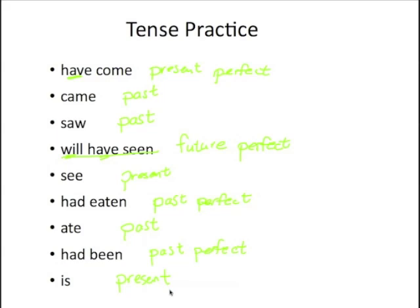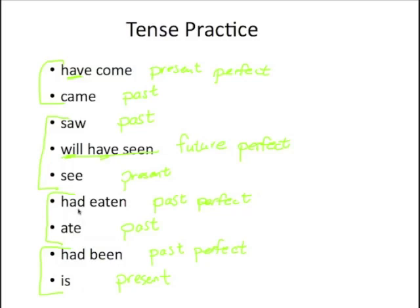Go back and look at the list. What's the infinitive of 'have come' or 'came'? It's 'to come' — a strange irregular verb because the past participle is the same as the infinitive: come, came, come. What's the infinitive of 'saw' or 'will have seen'? To see. Of 'had eaten' or 'ate'? Eat. And of 'had been' or 'is'? To be. There's no rule that you have to include 'to' when talking about an infinitive — just be consistent.